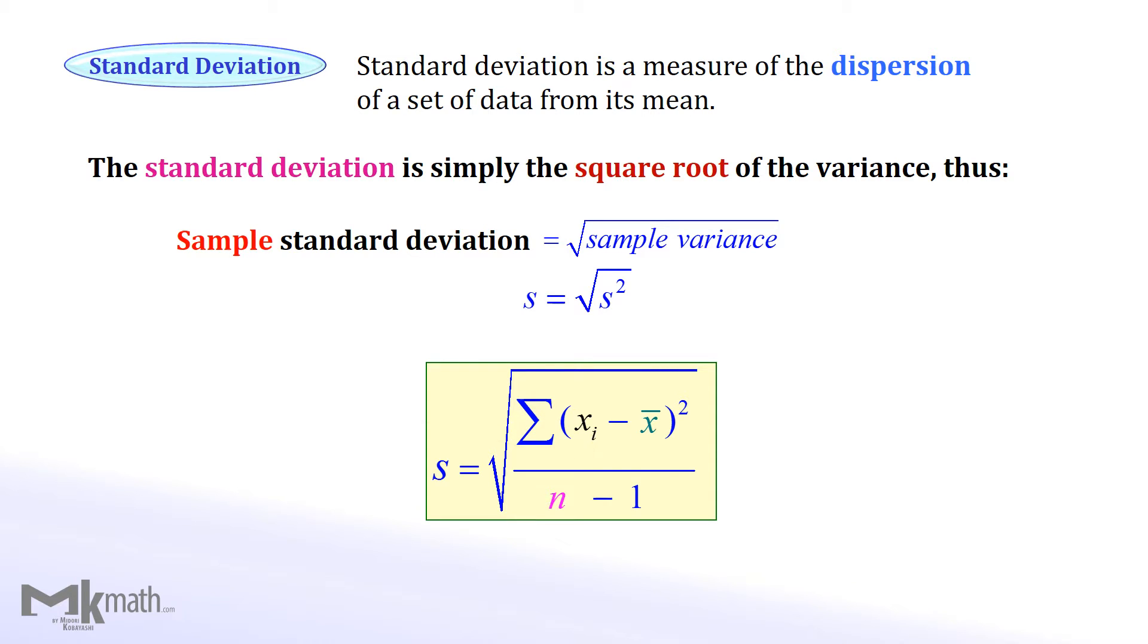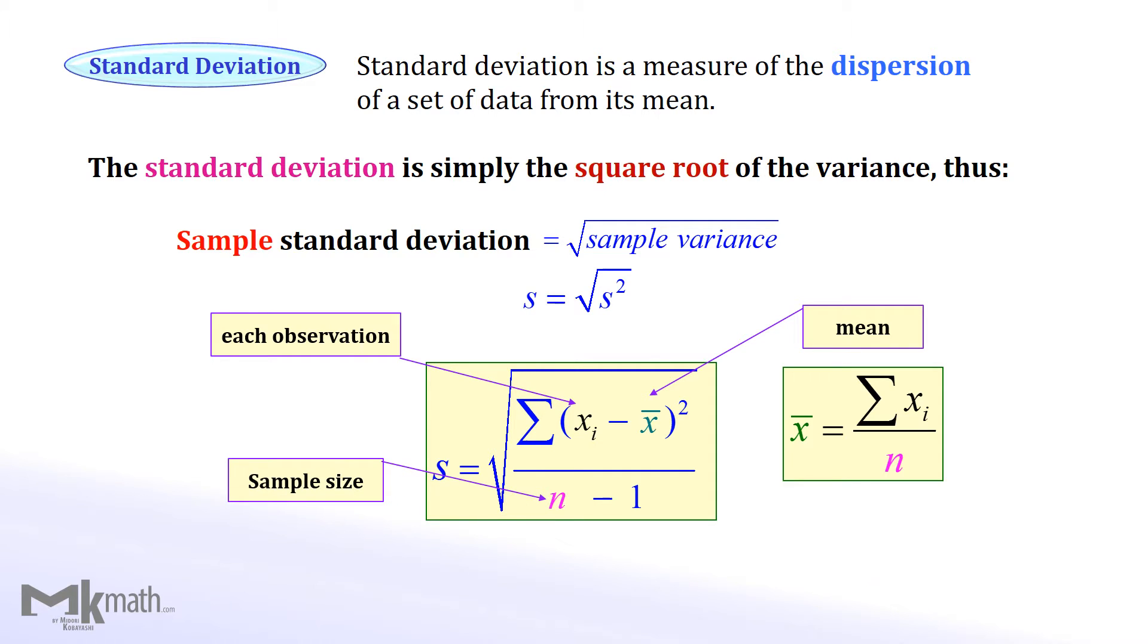Xi stands for each observation and X bar stands for the mean. Mean is calculated by another formula as shown. The last variable n stands for the sample size or the number of observations.